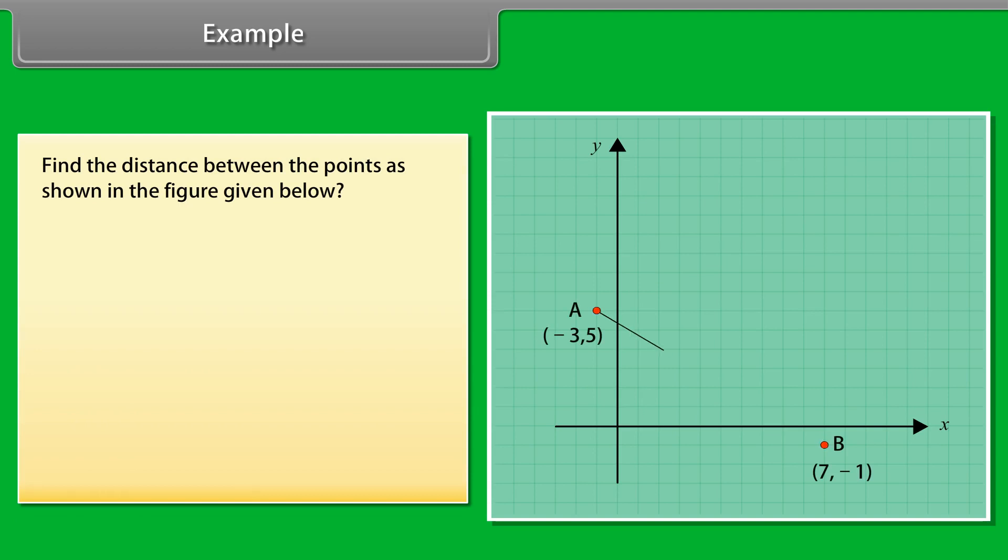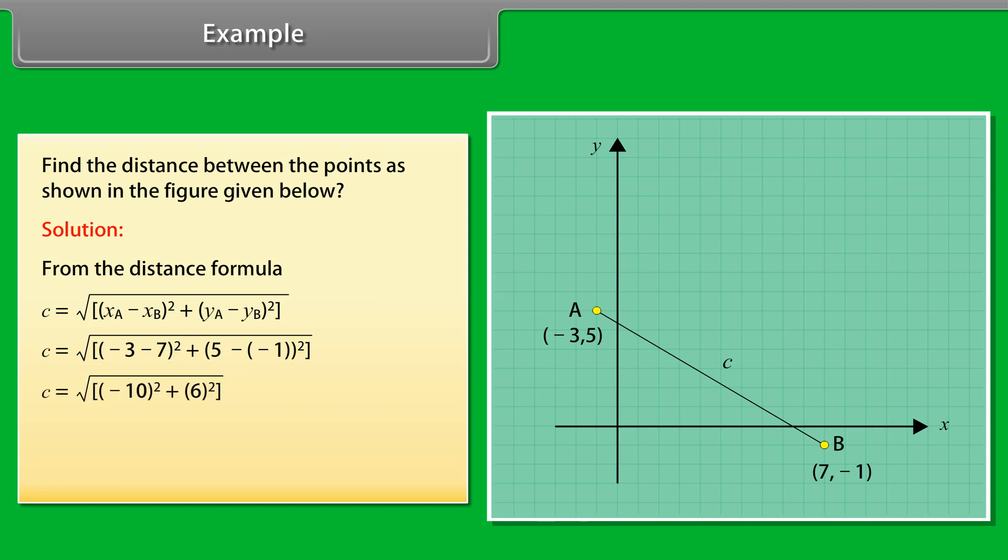Example: Find the distance between the points as shown in the figure given below. Solution: From the distance formula, C is equal to under root of XA minus XB whole square plus YA minus YB whole square. C is equal to under root of minus 3 minus 7 whole square plus 5 minus minus 1 whole square. C is equal to under root of minus 10 whole square plus 6 whole square. C equals under root of 100 plus 36. C is equal to 11.66.